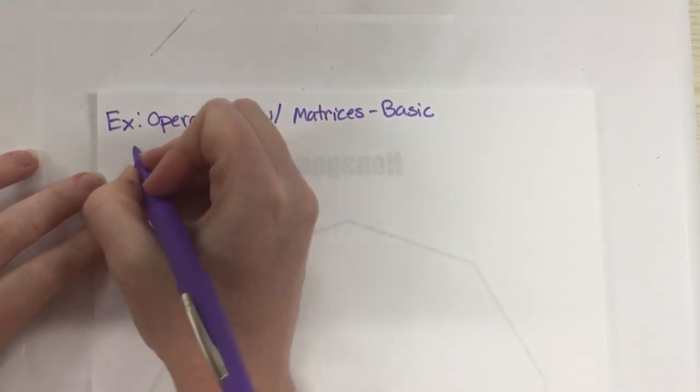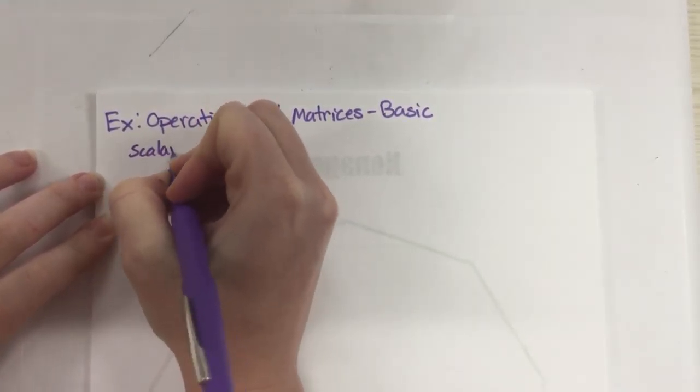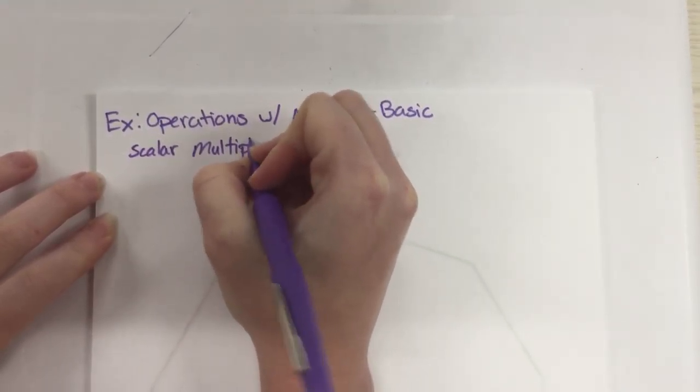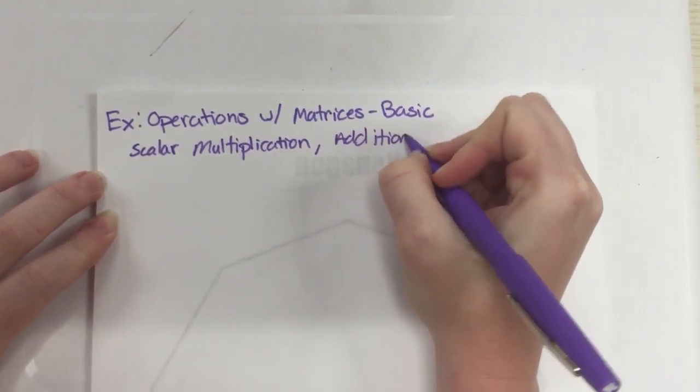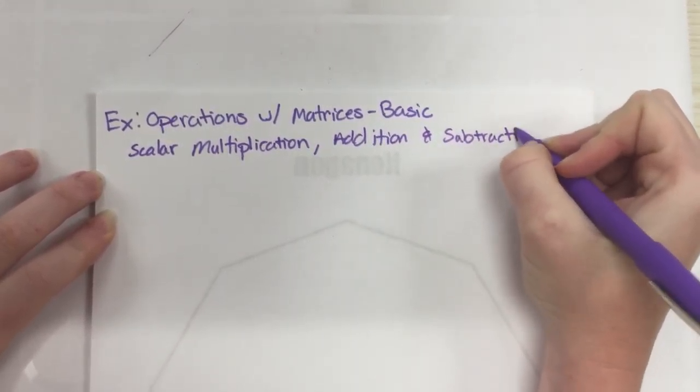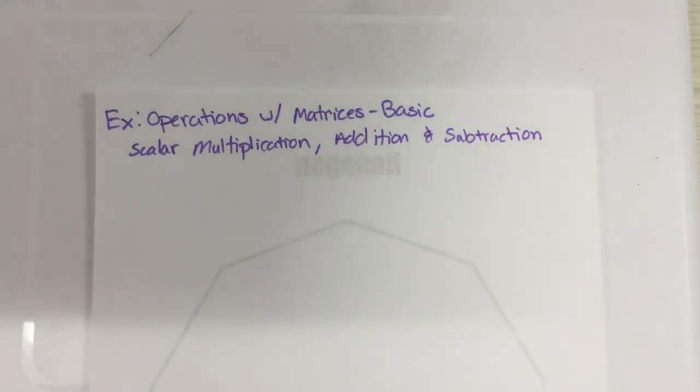And so our basic operations are what we call scalar multiplication, and I'll show you what that means in a second, addition and subtraction. So whenever you're asked to do any of those, do not type it in the calculator. It's going to make your life harder because they're just that easy.